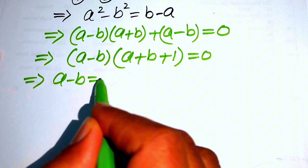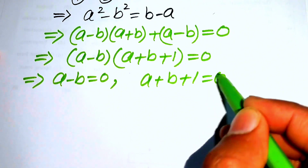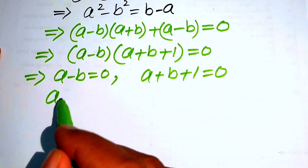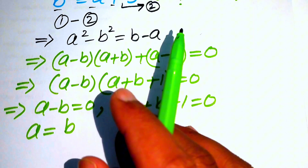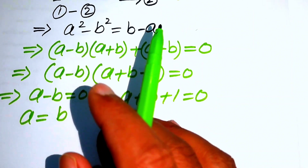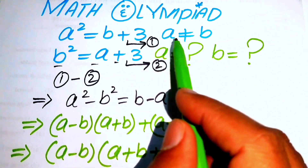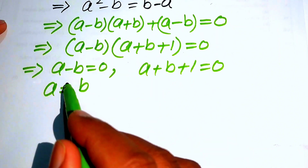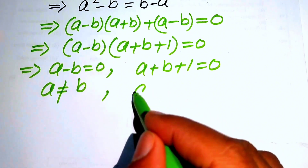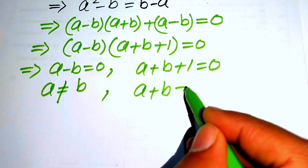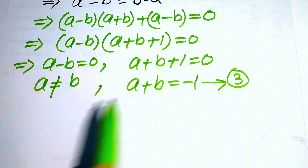This gives two cases: a minus b equals zero, or a plus b plus 1 equals zero. In the first case, a equals b, but our restriction says a is not equal to b, so we discard that case. Proceeding with the second case, we get a plus b equals minus one, which we call equation three.